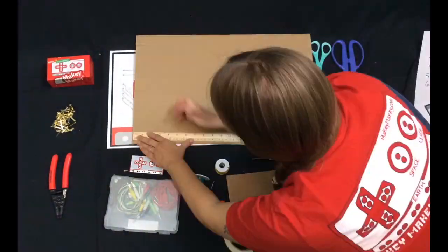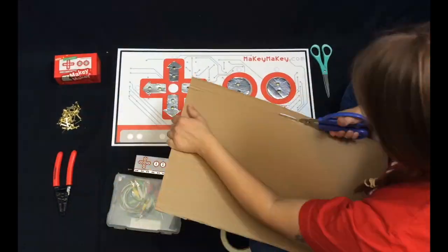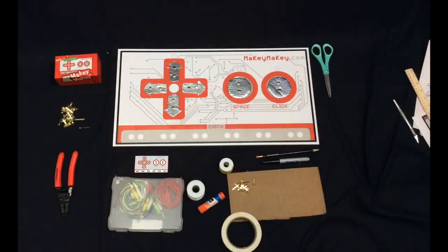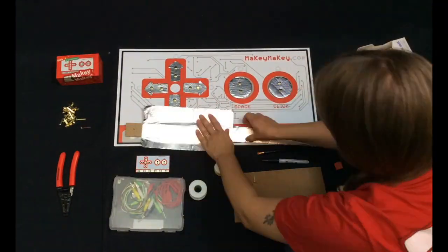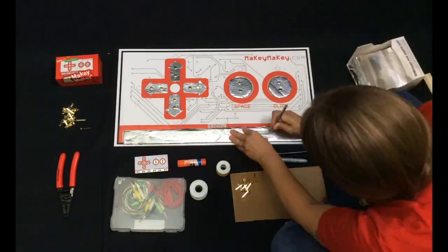Create your ground or earth connection by measuring with a ruler and cutting out another long strip of cardboard. You'll cover it with foil, just as you did with your key presses, and use the copper brads to place it.